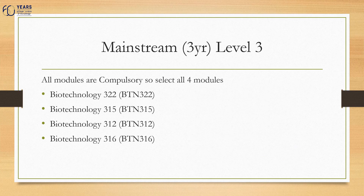At level three, all modules are compulsory, so you must select all four modules: Biotechnology 315 in the first semester, Biotechnology 316 in the first semester, Biotechnology 312 in the second semester, and Biotechnology 322 in the second semester.